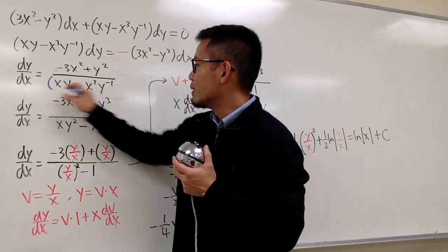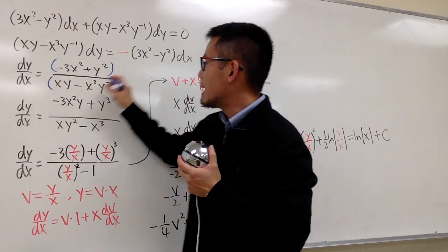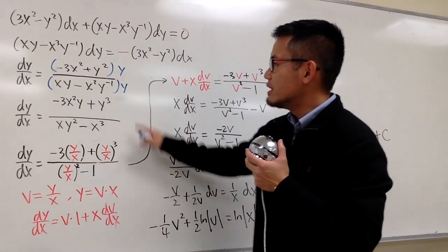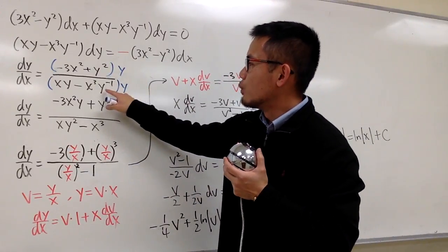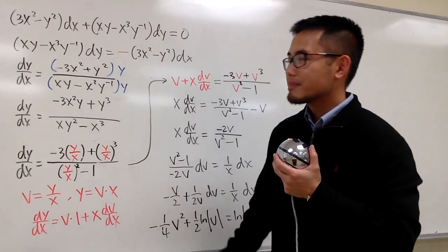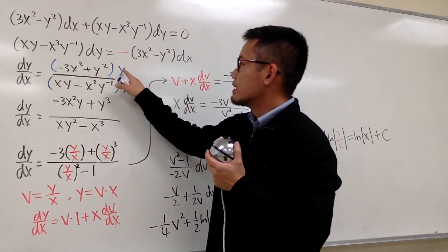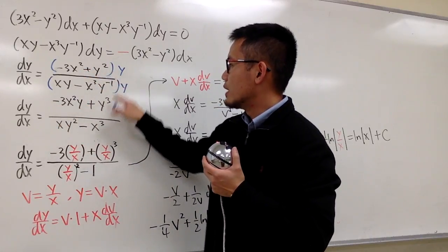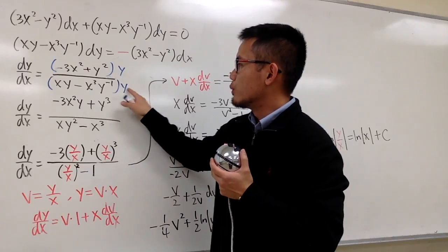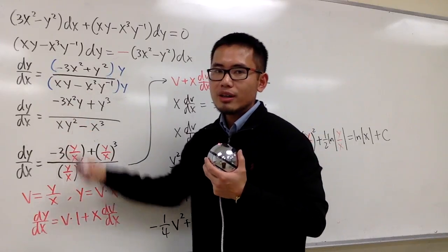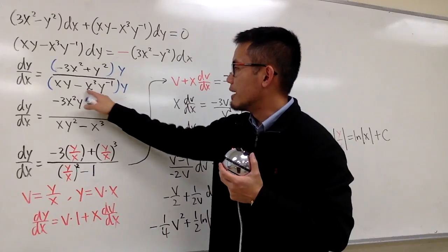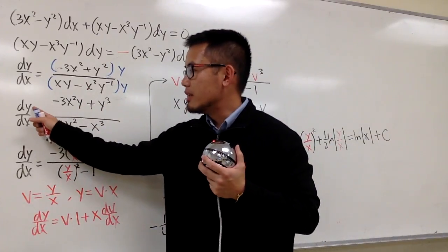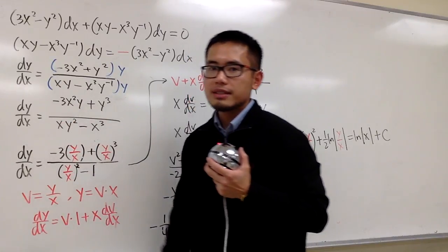To do so, let's go ahead and multiply the top and bottom by y — y to the first power. Because y to the first power times y to the negative 1 power cancel each other out. So y times negative 3x² gives negative 3x²y, and then y² times y gives y³, and then y times xy gives xy². At the end, the y to the negative 1 and y cancel, so we just have minus x³. Now we have dy/dx isolated, and this is what we have on the right-hand side.